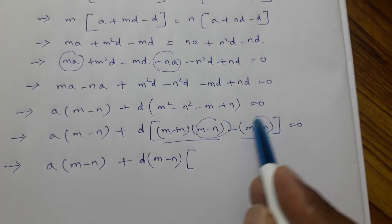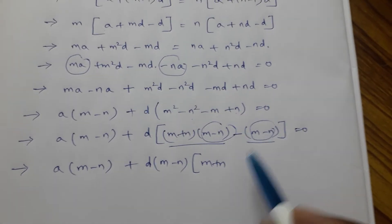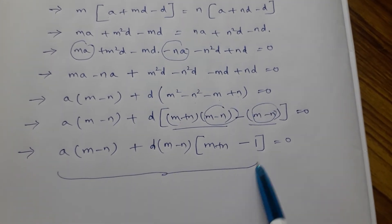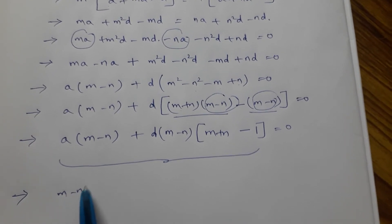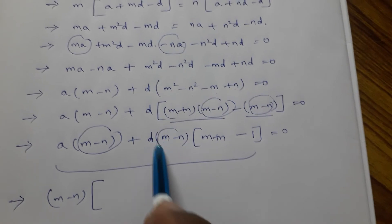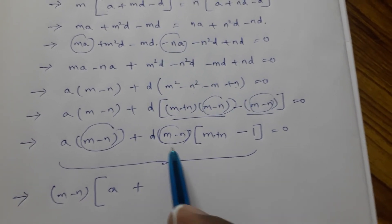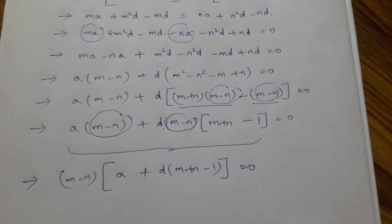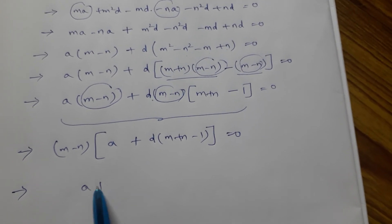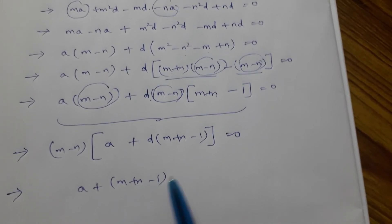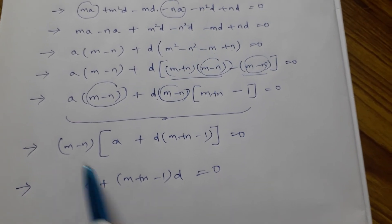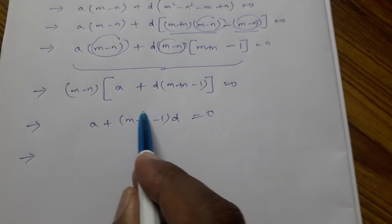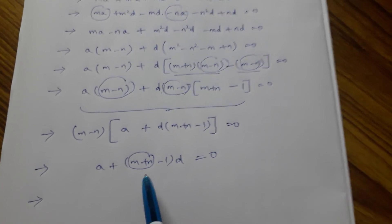Taking (m minus n) common from everything: (m minus n) times [a plus d(m plus n minus 1)] equals 0. Dividing both sides by (m minus n), we get a plus (m plus n minus 1) into d equals 0 divided by (m minus n), which is 0.